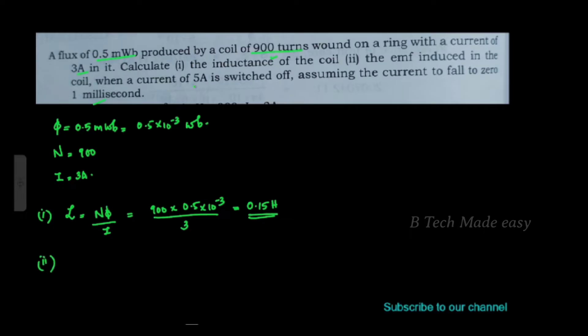For the EMF calculation: when the current of 5 ampere is switched off, the change in current DI is 5 ampere.